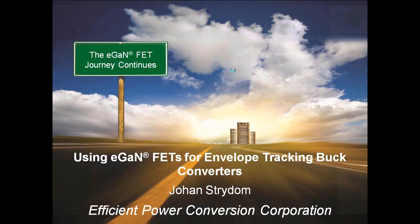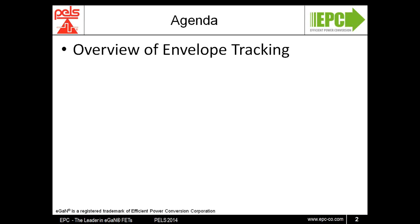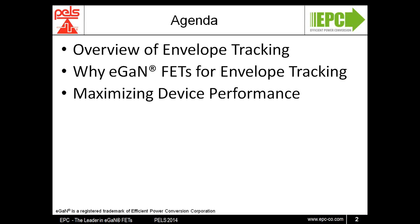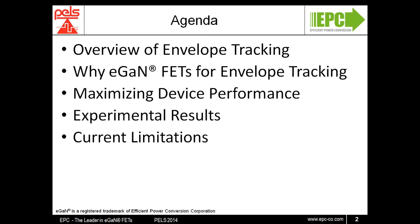The agenda today will first look at the concept of envelope tracking, what is required to do this, and why we are doing it. Secondly, we'll look at eGaN-FETs and how they could be used for envelope tracking. To use them, we need to maximize the performance of these devices and understand the characteristics and changes needed to achieve that. Then we'll look at some experimental results using the eGaN-FETs, and from that we'll be able to see what the current limitations are on further pushing the performance of these devices. And finally, we'll have a summary and hopefully some time for questions and answers.